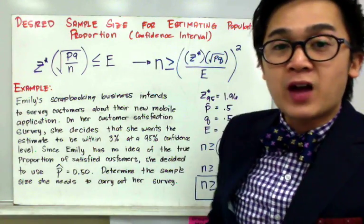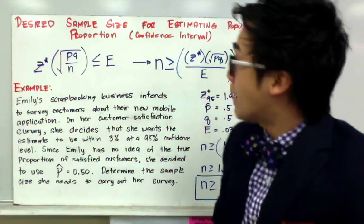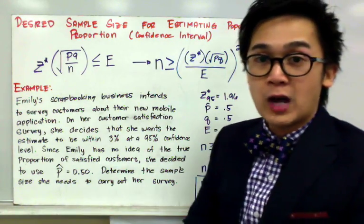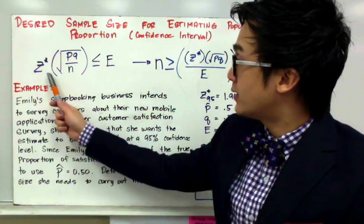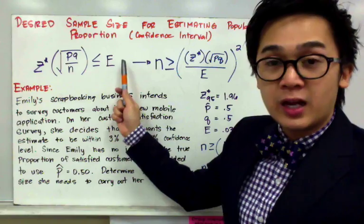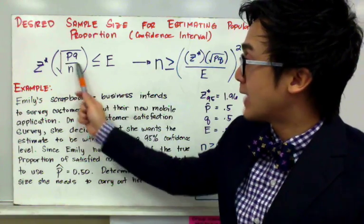Now let's find out the minimum number of sample size we need when we're conducting confidence interval for our population proportion. This is our margin of error, which should be less than or equal to our maximum error.